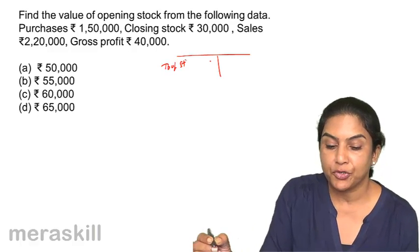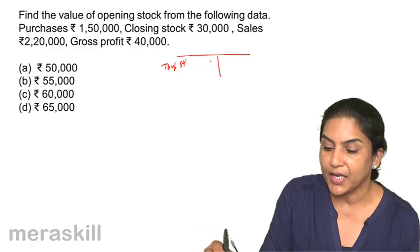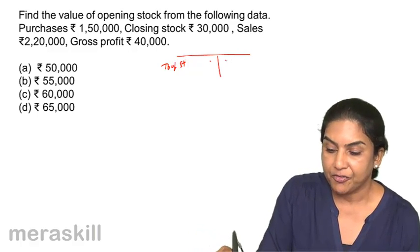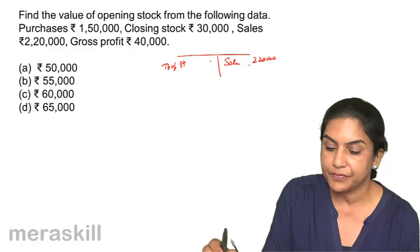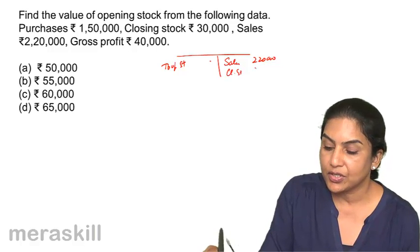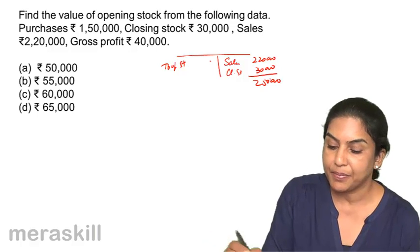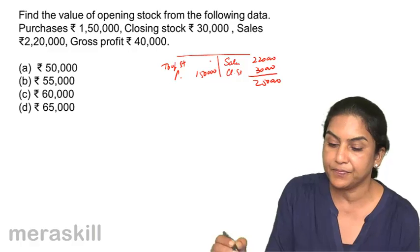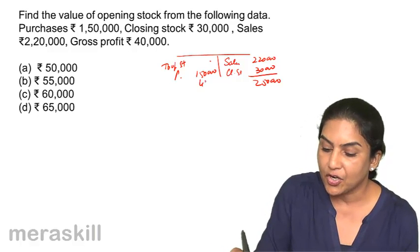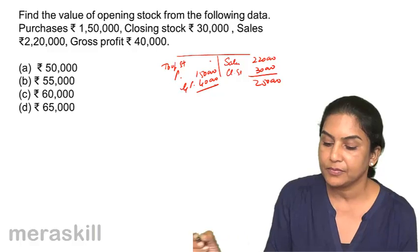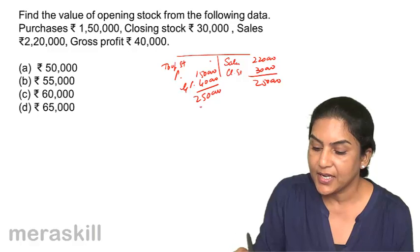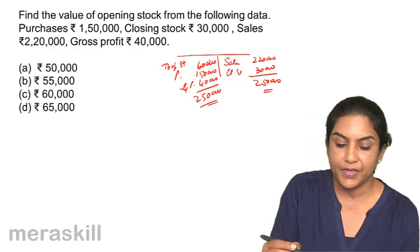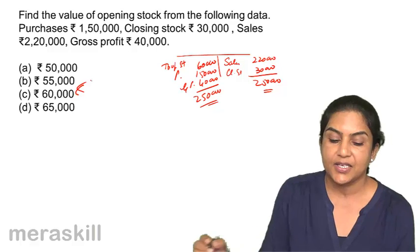If it's easier for you to prepare a trading account format, do that quickly and then arrive at the answer. Basically, it will be: sales 2,20,000, add closing stock 30,000, giving 2,50,000, less purchases of 1,50,000 and gross profit of 40,000. So 2,50,000 less 1,90,000 — the answer should be 60,000. Correct answer should be C, 60,000.